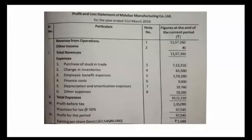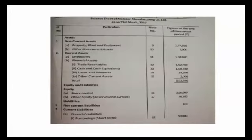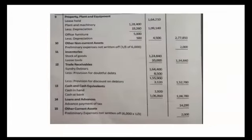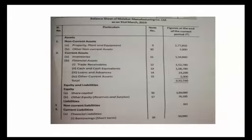The number of equity shares is 40,000, so earnings per share is equal to 1.688. Now we prepare the balance sheet. Assets — non-current assets — fixed assets: property, plant and equipment — Note No. 9. Freehold/leasehold premises: 1,64,210. Plant and machinery: 1,28,400, less 15% depreciation of 19,260, giving 1,09,140. Office furniture: 5,000, less 10% depreciation of 500, giving 4,500. Total property, plant and equipment: 2,77,850.